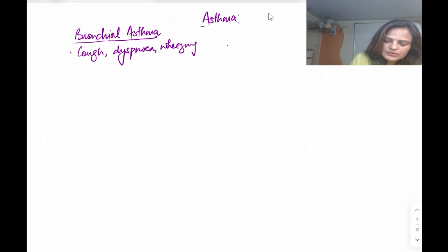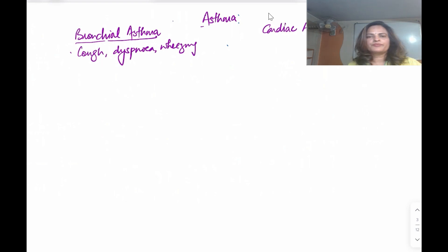Another type is cardiac asthma. What is cardiac asthma? It is a complication of left ventricular failure.